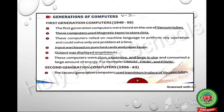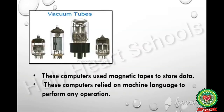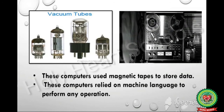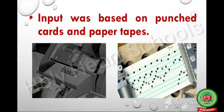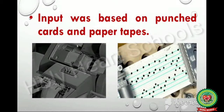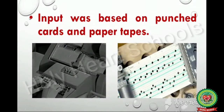First generation computers were based on the use of vacuum tubes. These computers used magnetic tapes to store data and relied on machine language to perform any operation. Input was based on punched cards and paper tapes.